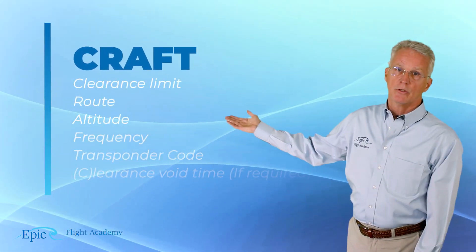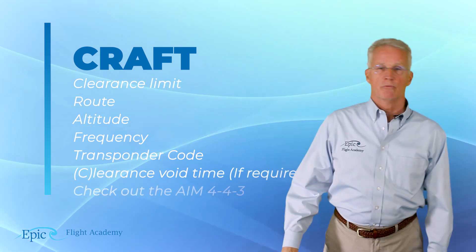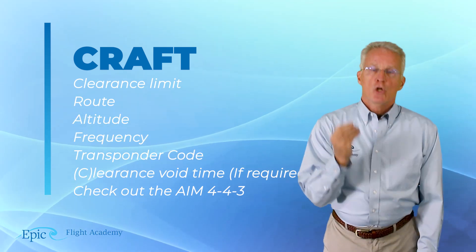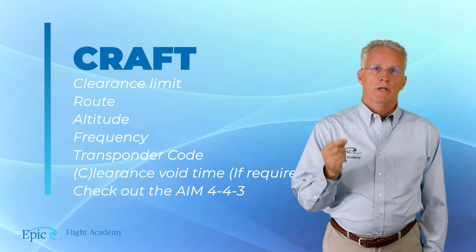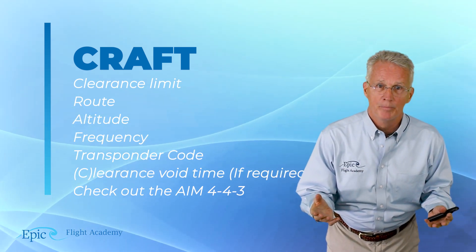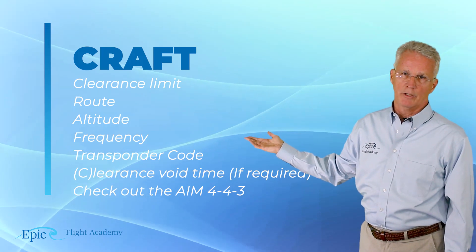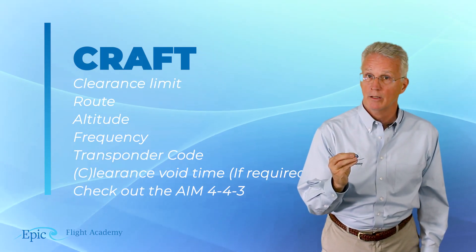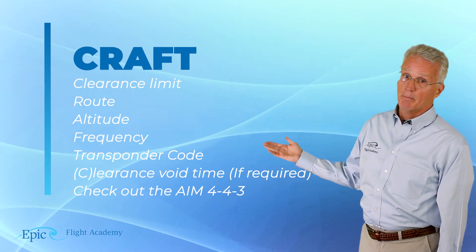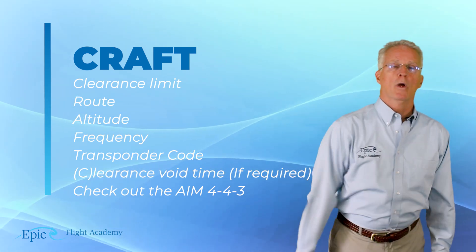Those clearances come to us in a specific sequence, and we use the acronym CRAFT: Clearance limit, Route, Altitude, Frequency, Transponder code, and then maybe a Clearance void time if appropriate. Please remember: an acronym is simply a memory aid — knowing it by itself is not enough. We want to know the whys and wherefores. The CRAFT acronym is drawn from the Aeronautical Information Manual, chapter 4, specifically AIM 4-4-3. Review this with your flight instructor.